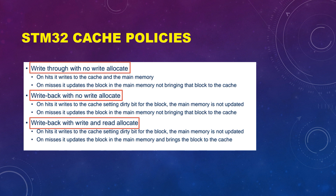The last one is write back with write and read allocate. In case of a hit, the cache is written and the dirty bit is set — the main memory can update later, that's how write back works. In case of a miss, the memory block is updated and the block is copied into the cache, because now we have both read and write allocate.